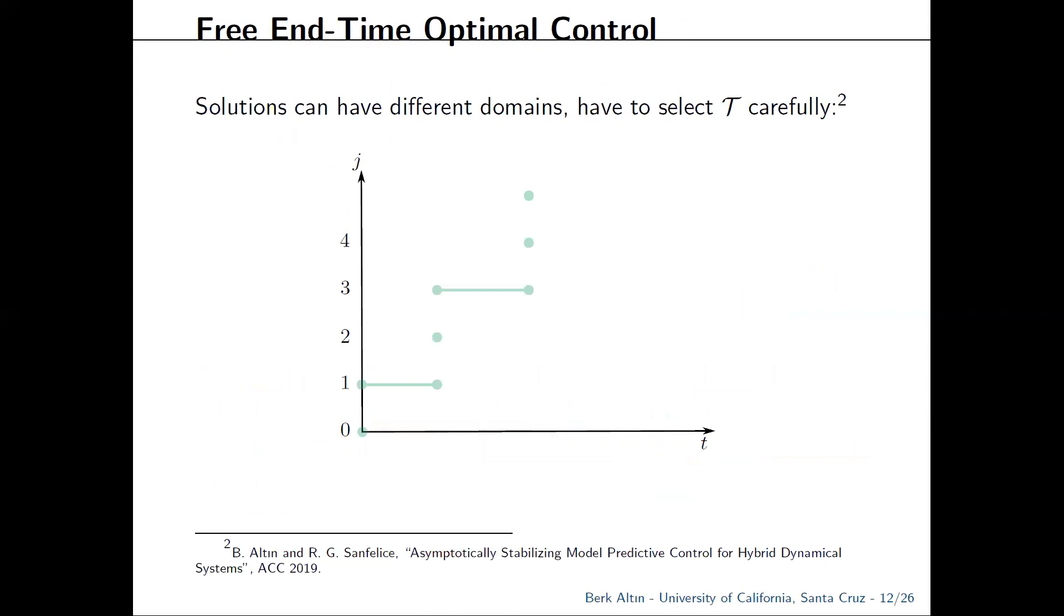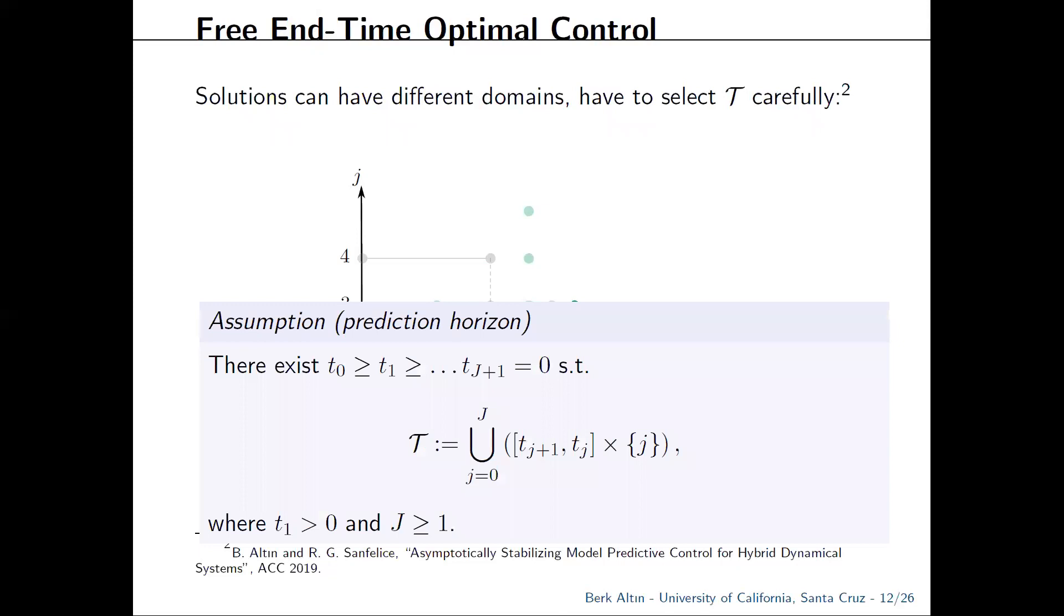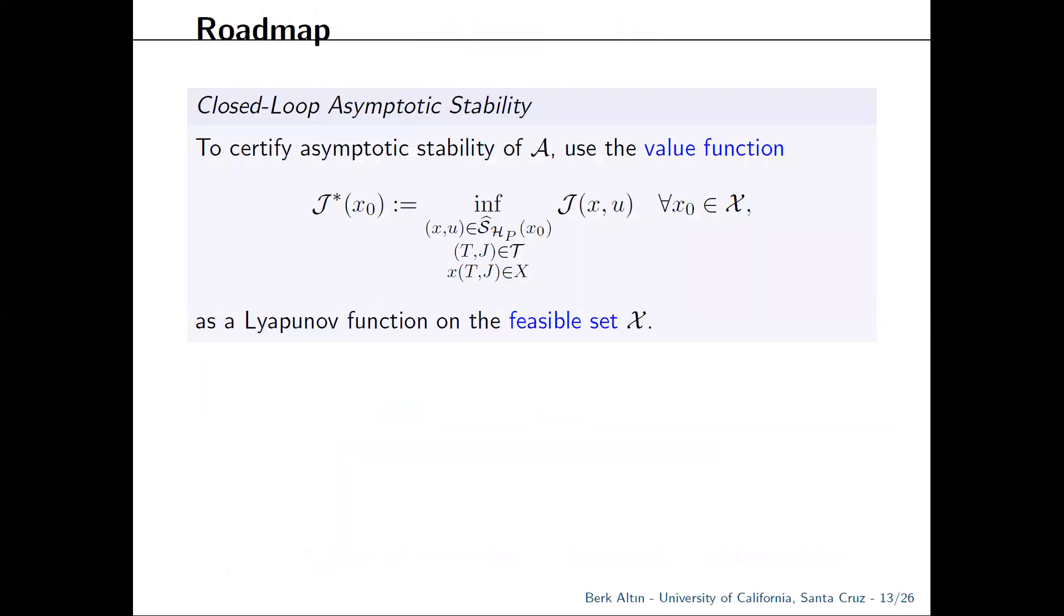The problem with the bouncing ball example is that solutions have drastically different domains from nearby initial conditions. To take care of this, you can select the horizon to have a rectangular structure or perhaps a structure that looks like this. What you may have noticed is that these two structures resemble reverse, so to speak, hybrid time domains, and that is one of our main assumptions. We choose the horizon to have a reverse hybrid time domain structure so as to maximize feasibility properties of the closed loop. And that's a distinguishing feature when compared to continuous time or discrete time MPC.